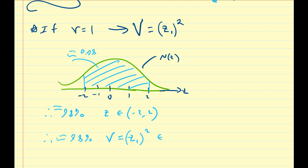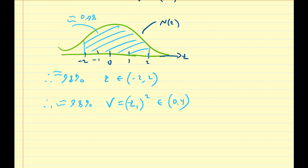When we square numbers, they become positive or 0. The highest number we have is 2, so that's going to go to 4. Whether you include the boundaries or not doesn't necessarily matter here. So there's a 98% chance that v is going to be between 0 and 4, just as z was between negative 2 and 2.